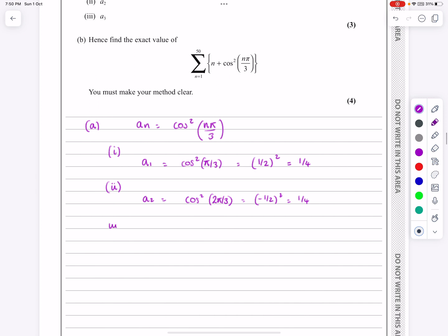And then for part 3, a3 is equal to cos squared 3 pi over 3. I'm not going to write that, I'm going to write pi, but cos squared pi. Well, cos pi is equal to minus 1, so we've got minus 1 squared, which is then going to equal to 1.